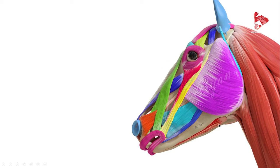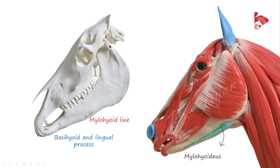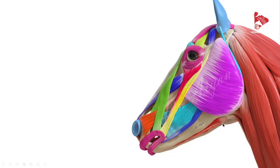We've covered most muscles visible in the lateral view of the horse's head. There are deeper muscles, such as the temporal muscle, which originates from the temporal fossa and inserts to the coronoid process of the mandible with the same function as the masseter. There are also the medial and lateral pterygoid muscles, which we cannot see in this view and will be covered in another video. If you have any questions, please write them in the comments and share this information with your colleagues.